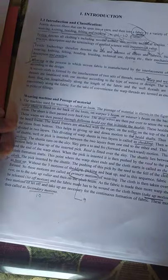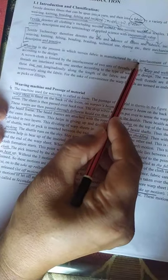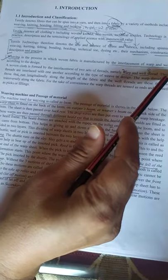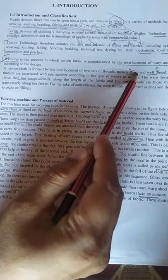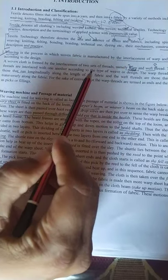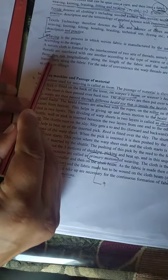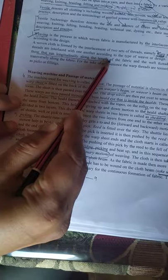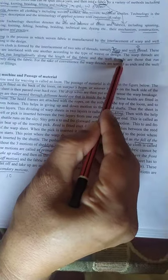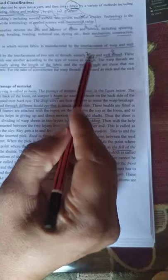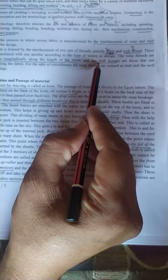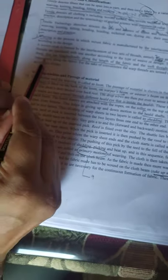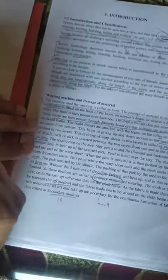What is weaving? It is interlacement of warp and weft. Warp, another name is end, runs longitudinally along the length of the fabric. Weft, other name is pick, runs traversely or widthwise.